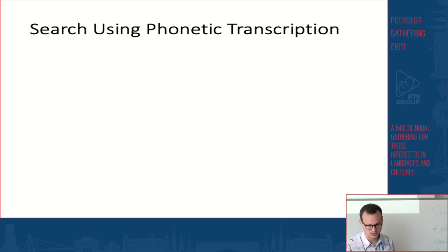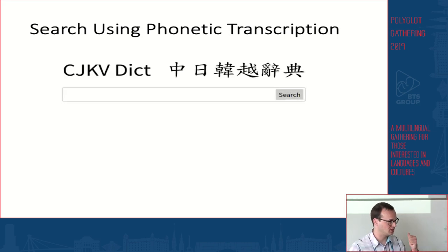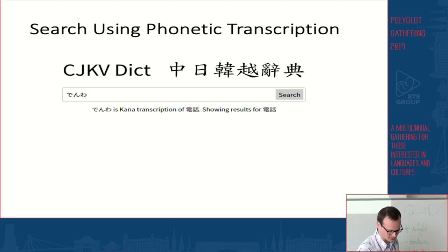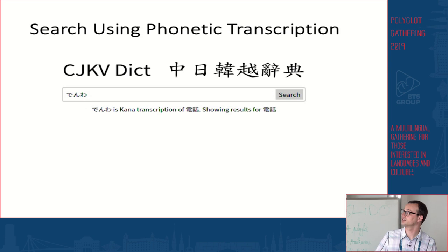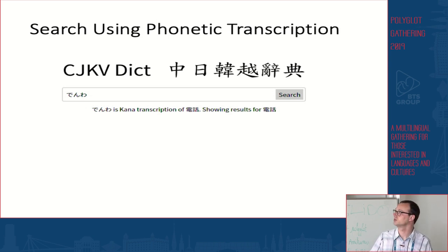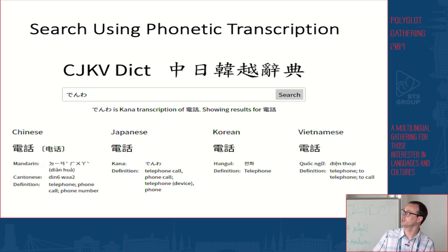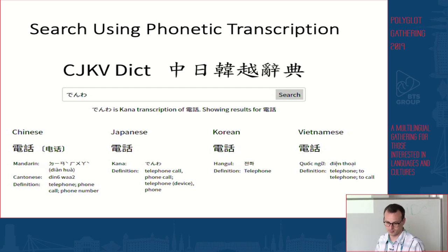When you search using a phonetic transcription — for example, if I search for '電話' in kana — the dictionary detects it as the kana transcription of those two characters. You then get results not only for Japanese, but also for Chinese, Korean, and Vietnamese for the word that uses the same characters.